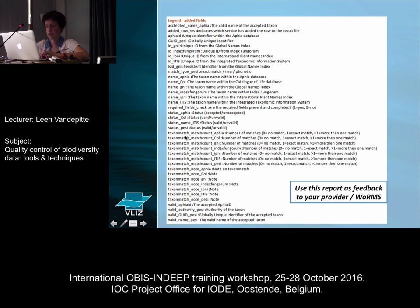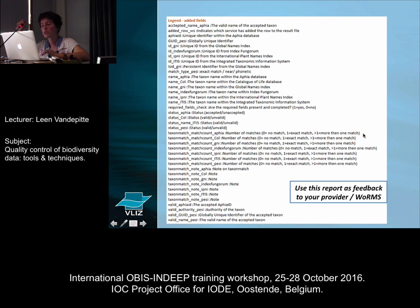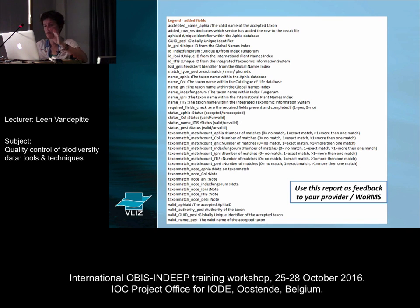You can use this report as feedback both to your provider and to WoRMS. The 'taxon match count' column: if it says zero, there's no match; if it's one, there's an exact match; if it's more than one, there's more than one match — those are actually the homonyms that it shows here. It's a little bit different than what it shows on WoRMS, but it gives you an indication of how many matches there are.